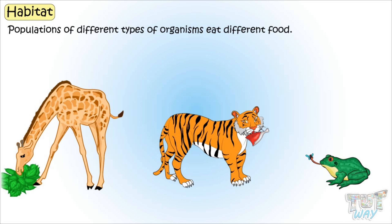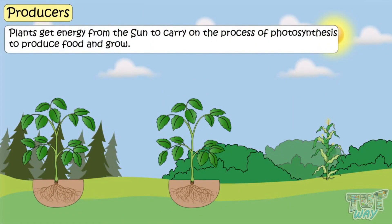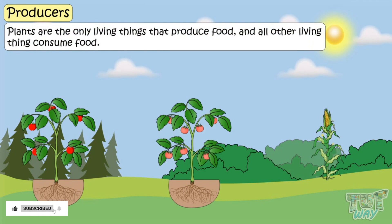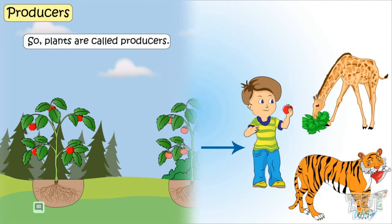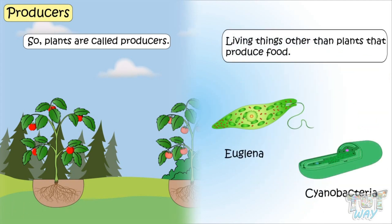First of all, let's see what are producers, consumers, and decomposers in a habitat. Producers — plants get energy from the sun to carry on the process of photosynthesis and produce food and grow. So plants are the only living things that produce food; rest all living things consume food, so plants are called producers. There are also some other organisms that produce food other than plants. Euglena and cyanobacteria are examples of microorganisms that can produce food through photosynthesis, and they are not plants. They are mainly found in pond water.